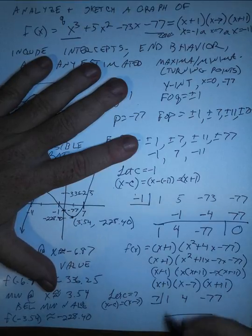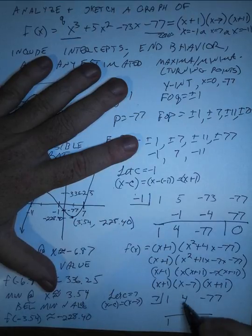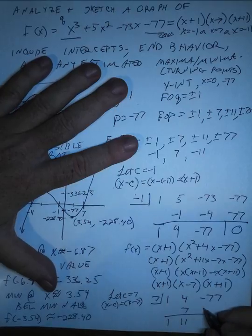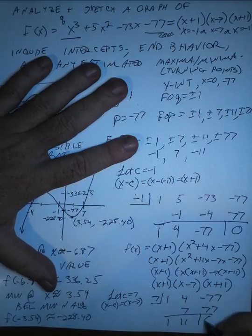And then again, using synthetic division, this goes very quickly. 7 times 1 is 7. You add, multiply and add. So add, that's 11. 7 times 11 is 77. And that adds up to 0.